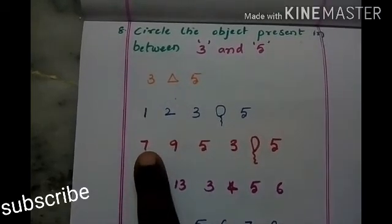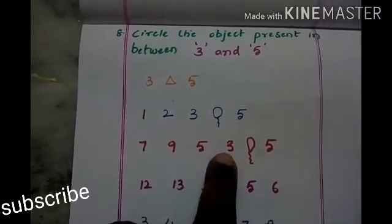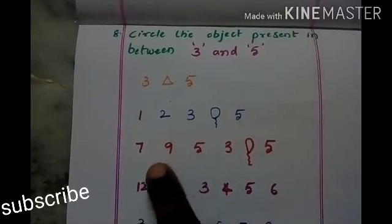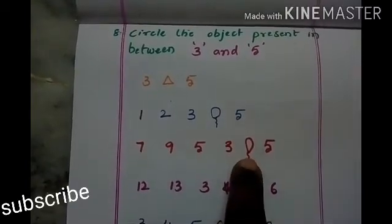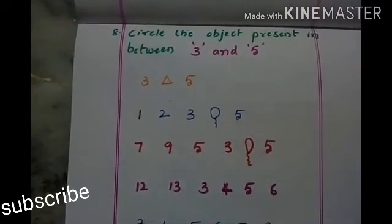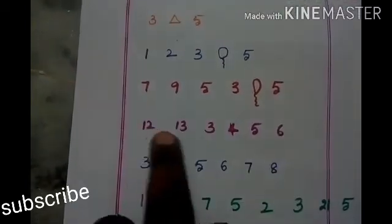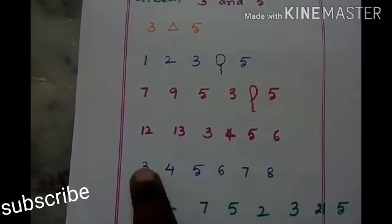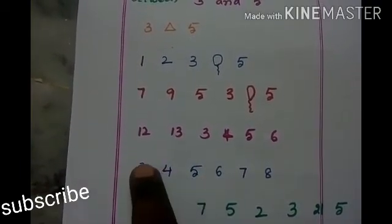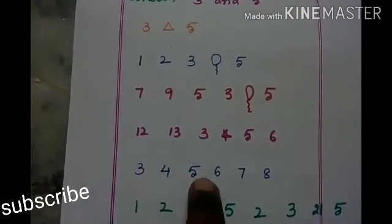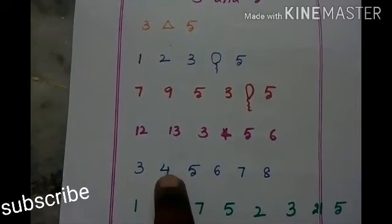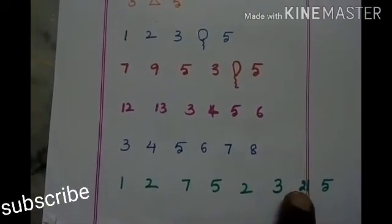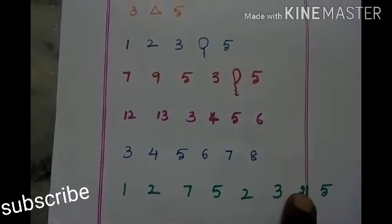Here 7, 9, 5, 3. Balloon and 5 — where is the 3 and 5? In between, what is there? Red color balloon. And where is the 3 and 5? Here it is star. Next, what number came in between 3 and 5? 4. And here, in between the 3 and 5? 21.